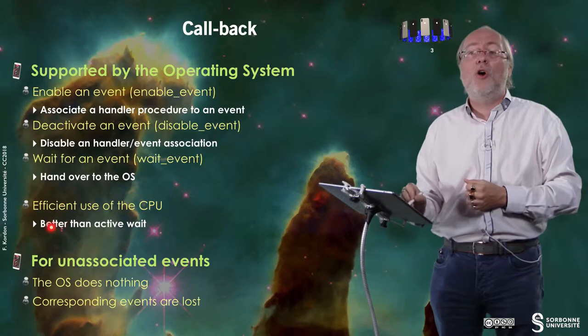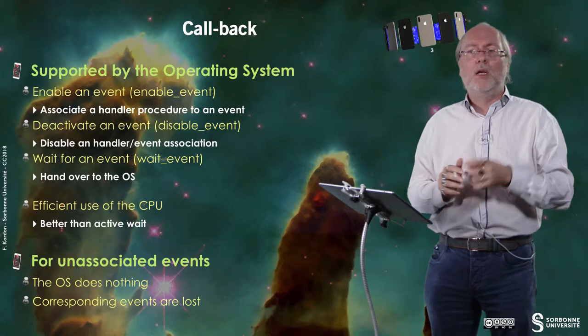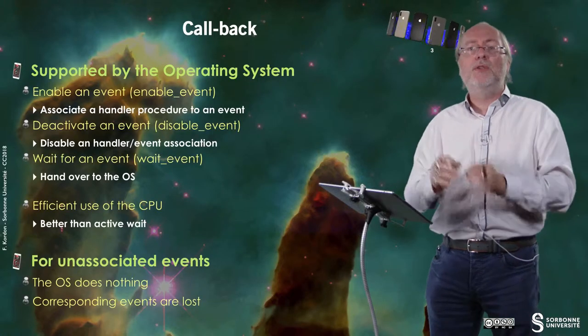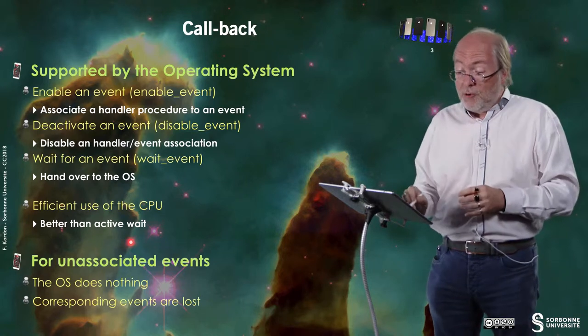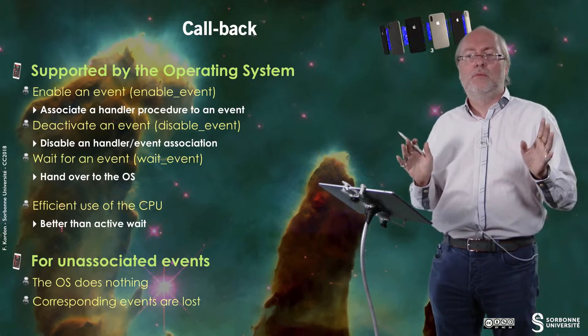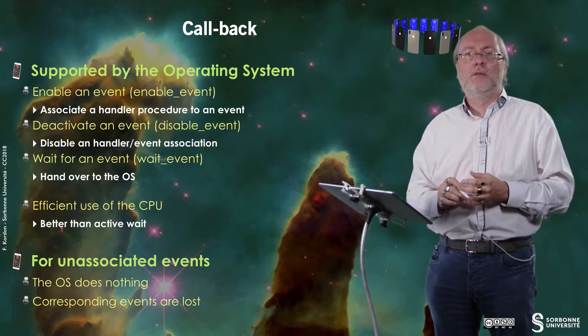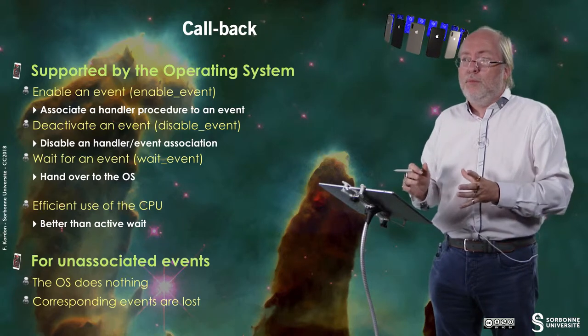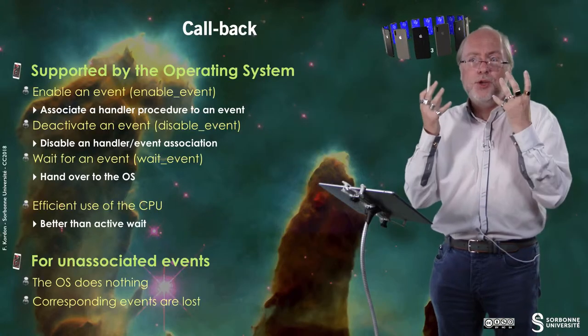This is really important because it allows you to enable a very efficient use of the CPU. Remember that we are in the situation of embedded systems where you have limitations in terms of CPU, memory, and energy. And of course, the question is raised: what do we do for unassociated events? You just ignore them — they are lost. You can imagine that at a given stage you want a tap to be considered; you want to trap it to do some action. But once you are processing this event, you may just want to disable the tap, so you de-associate — you disable the association between the tap and the corresponding procedure. This is the basic notion of callback.